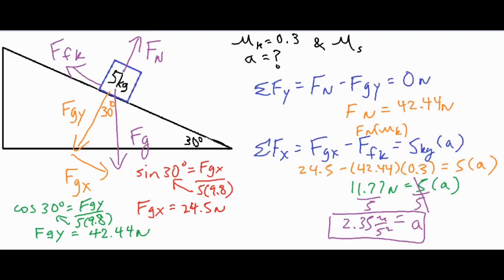For the typical situation where a mass is sliding down an inclined plane, that is your approach. You'll use the normal force for the friction formula — you don't need it if you're ignoring friction, but if friction is involved you need the normal force to plug into the friction formula and subtract it from fgx. Then set that equal to ma to find your acceleration.